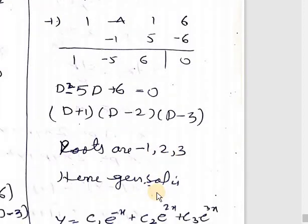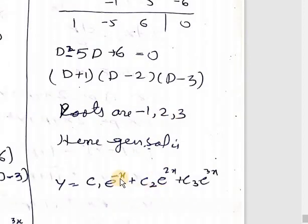So what will be the solution? y = C₁e^(-x) + C₂e^(2x) + C₃e^(3x). These were the two cases of real and distinct roots of higher order differential equations. In the next video, we shall be showing you the repeated roots of higher order differential equations.